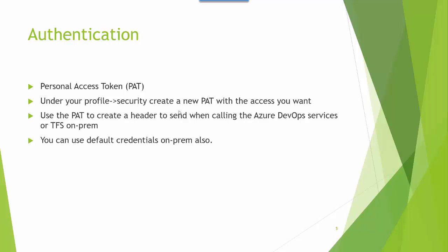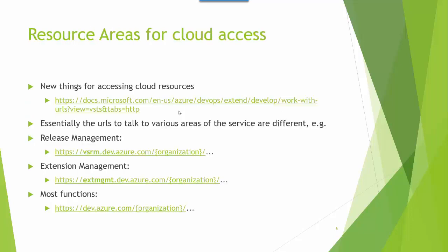To access the REST API you need to create a Personal Access Token (PAT). Under the profile section when logged into your Azure DevOps account, go to the Security section and create a new PAT with all the access you actually want for it. We'll do that before we start the demos. We'll use that PAT to create a header, then send that header to all of our calls when we use Invoke-RestMethod. If you're on-premises, you can also use your default credential.